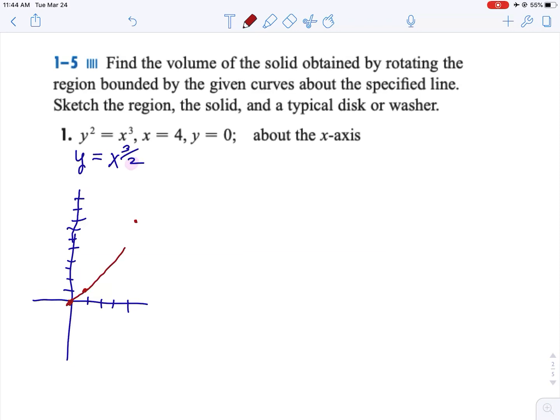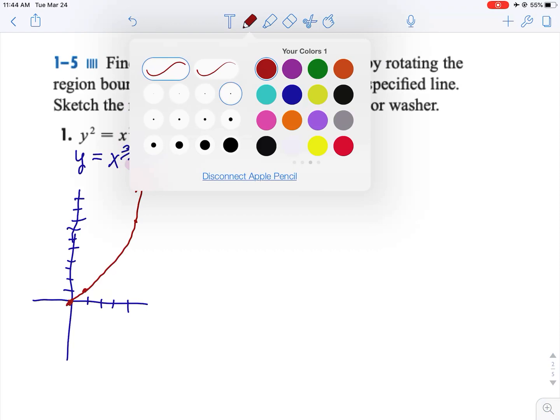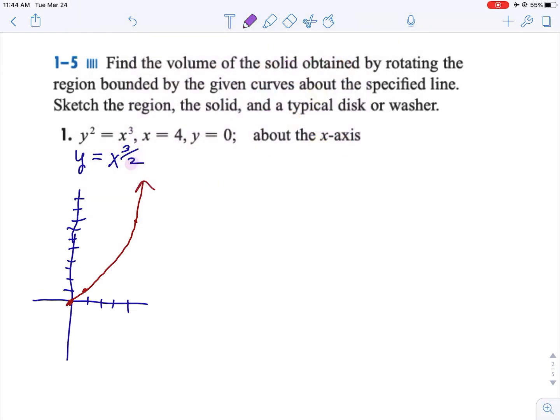So it kind of looks like a half parabola sort of thing. Now we are looking at the region between the curve, x equals 4 and y equals 0. So that's this region here rotated about the x-axis.